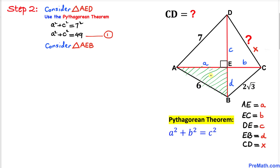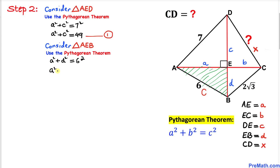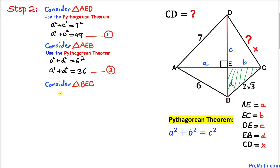Now let's focus on triangle AEB. This is a right triangle as well, so we use the Pythagorean theorem again. The longest leg is AB = 6, so applying the formula gives us a² + d² = 36. Let's call this equation number two.